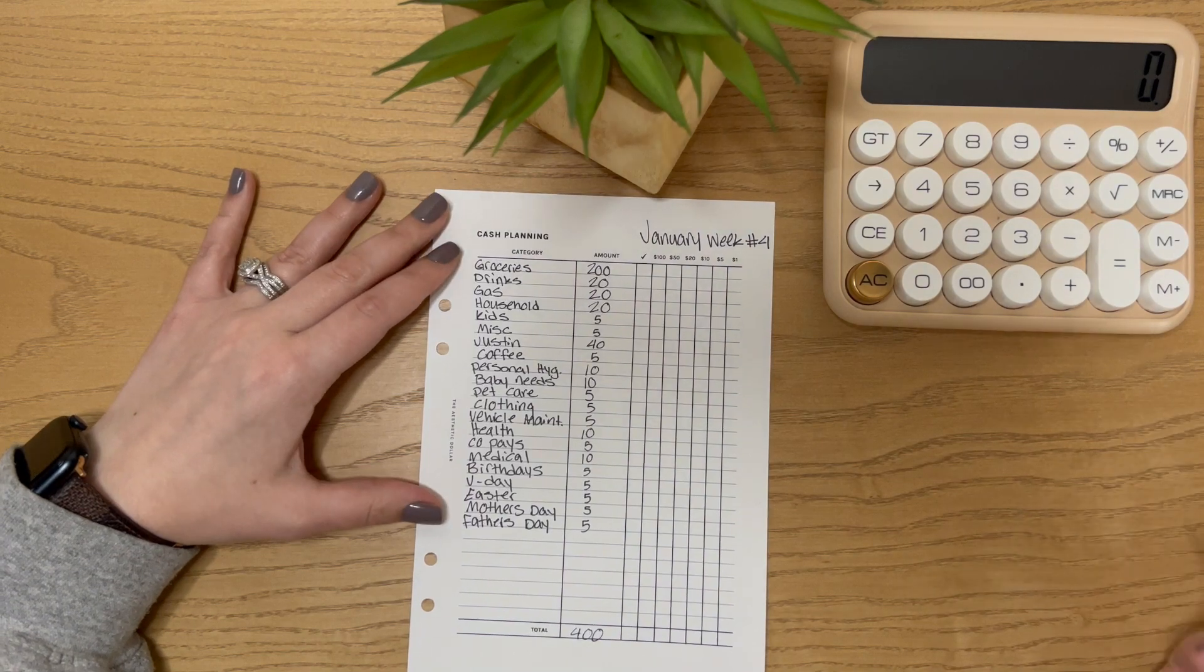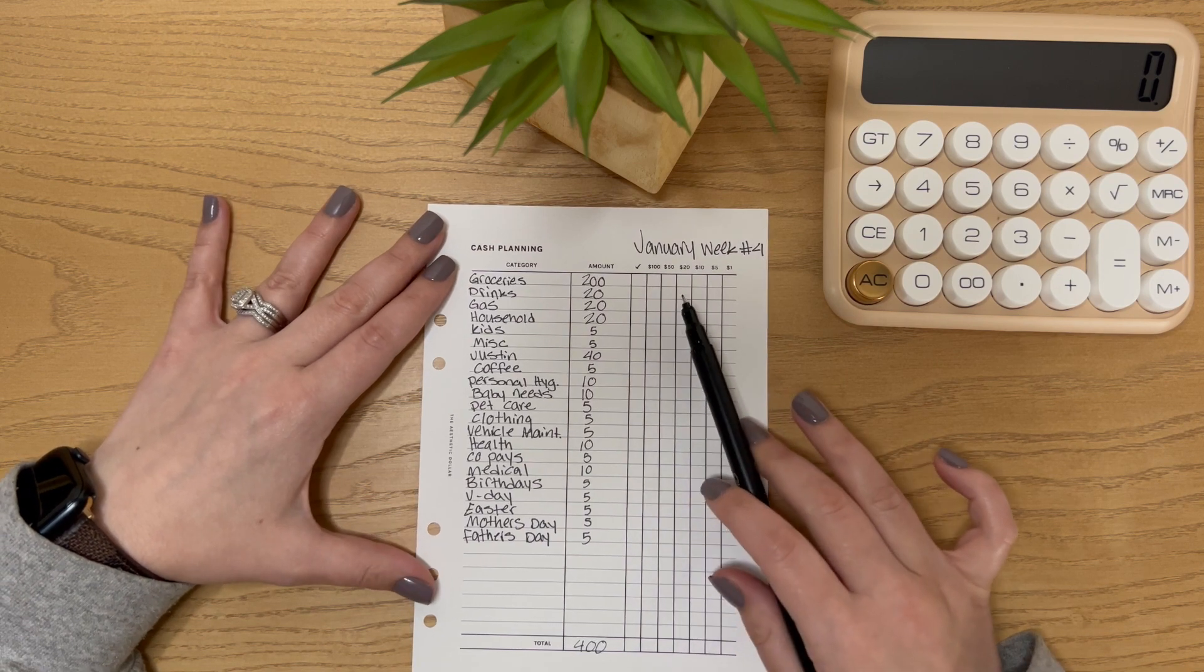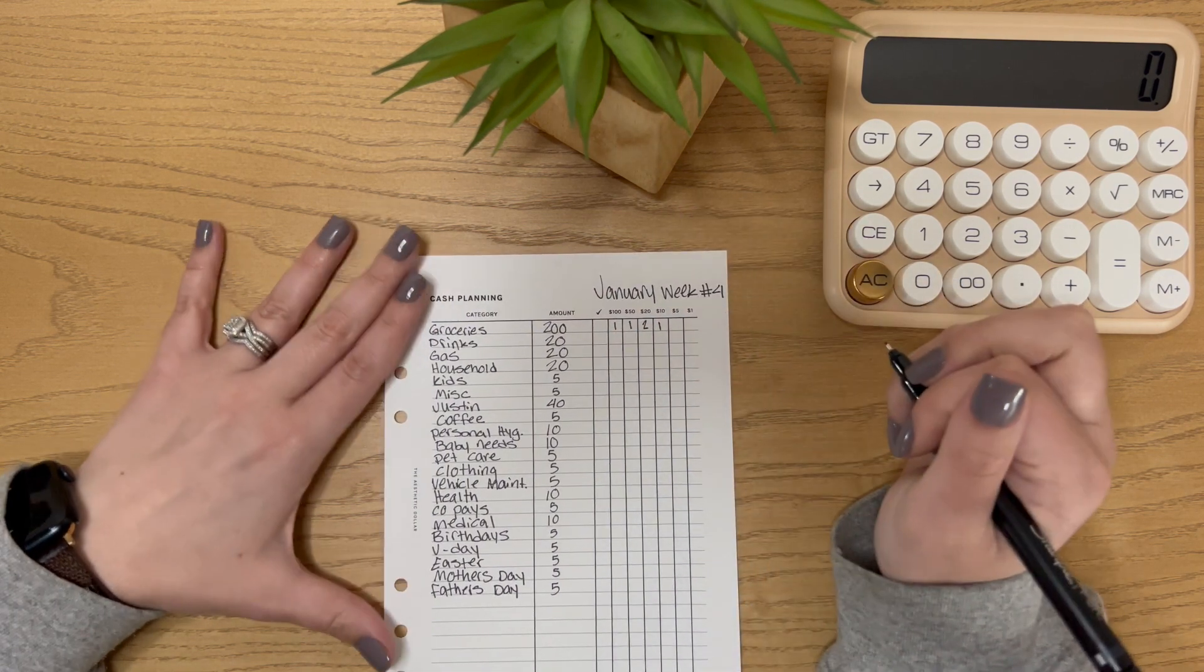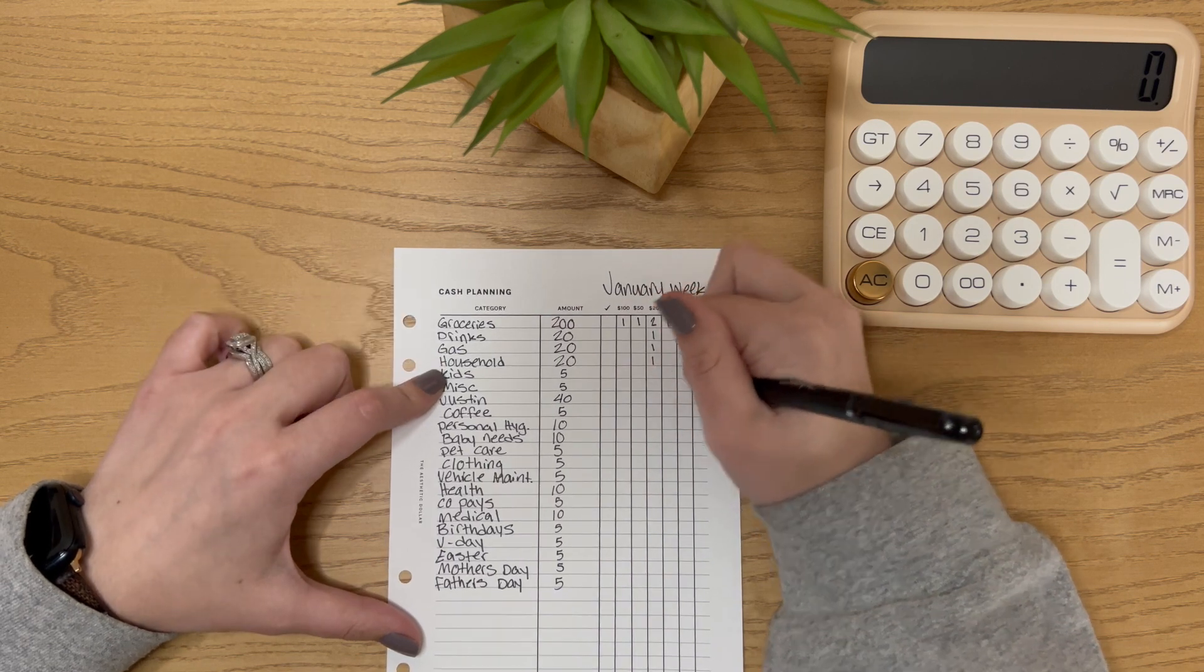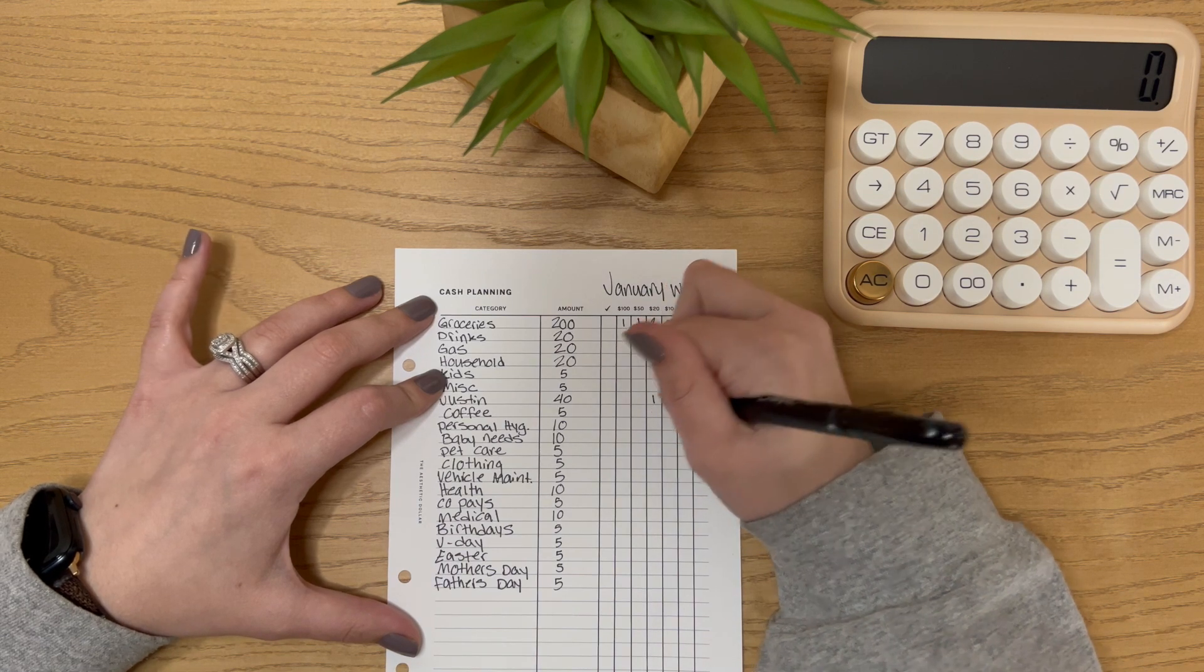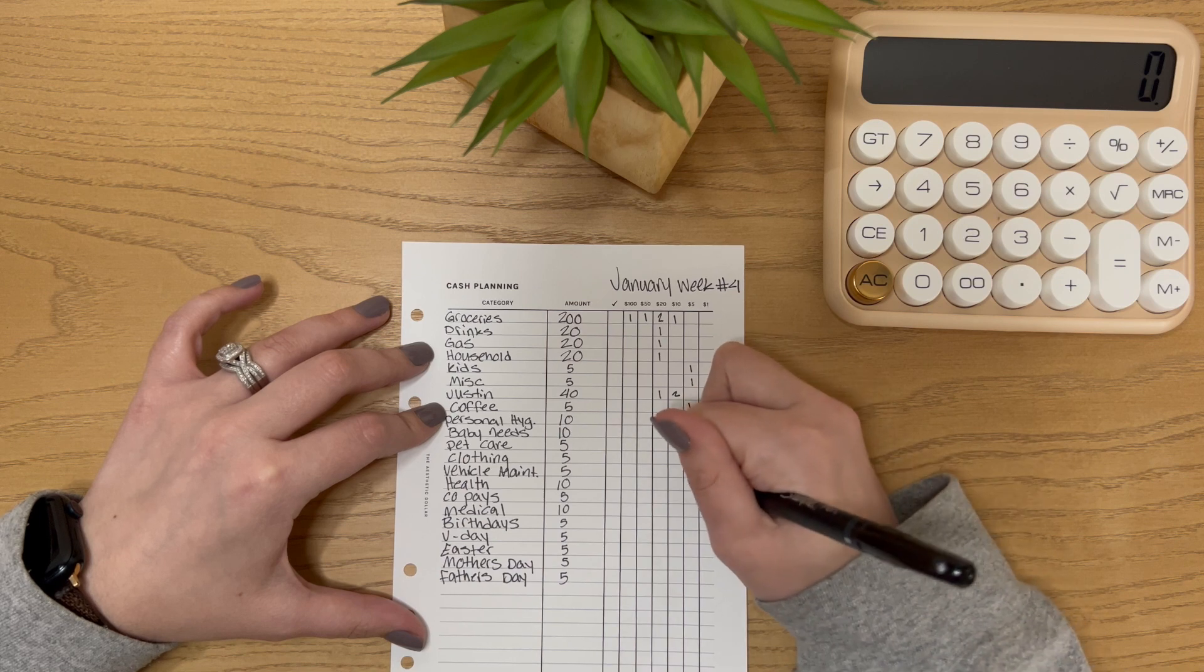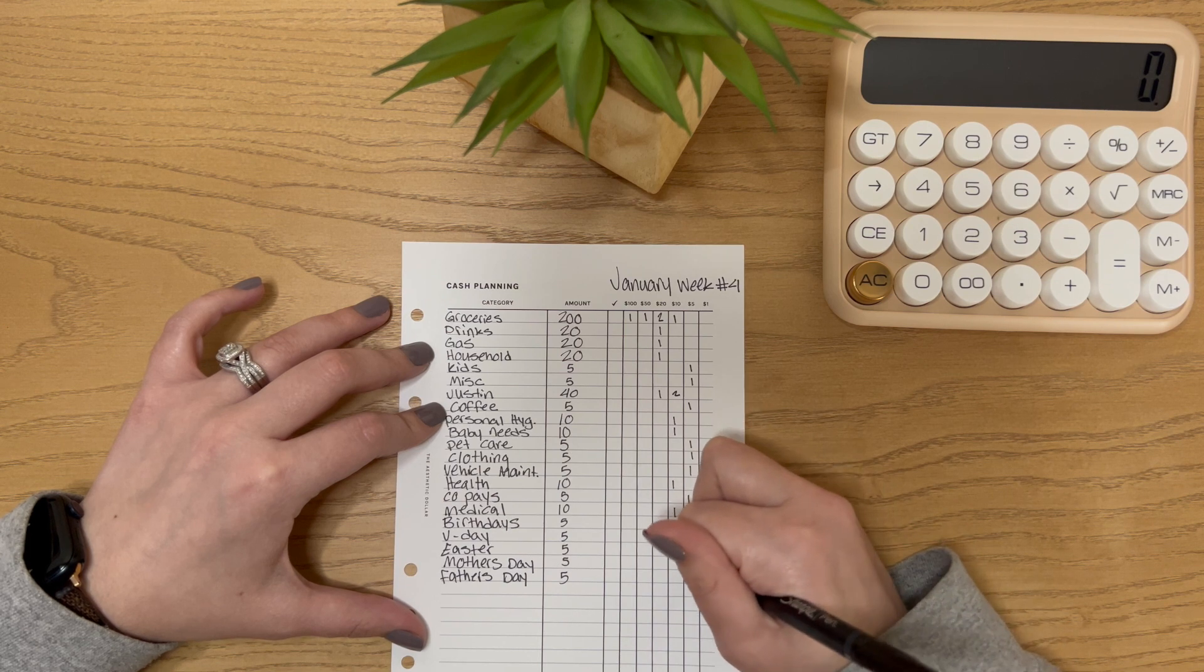So next I go to this section and I kind of just fill in what denominations I would like to put in each envelope. So for groceries, I normally just do a hundred, a 50, two twenties, and a 10. Drinks, I'll do a 20. Gas, I'll do a 20. Household, 20. And then fives. For Justin, I like to do a 20 and two tens. Coffee will get five. These will get a 10. Fives. 10, five, 10. And then fives the rest of the way.